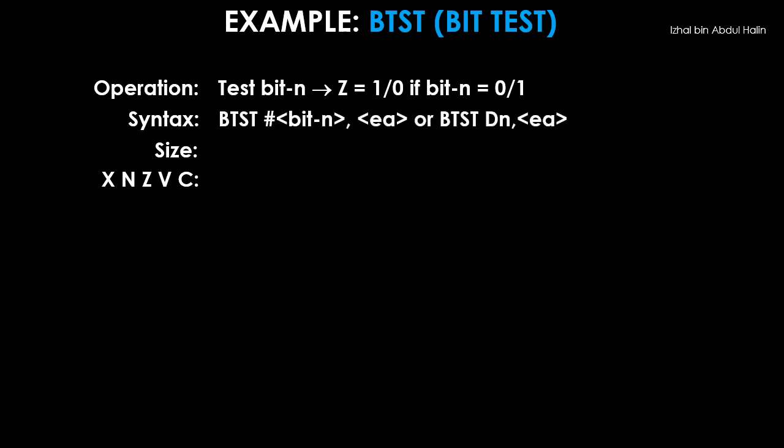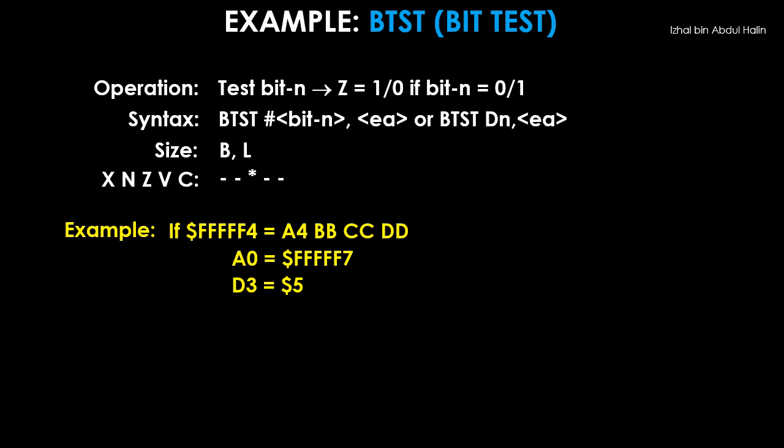The operand size is either byte or long word. The only flag that is affected by this instruction is the Z flag. Now for the example, the long word stored in address FFF4 is shown. Address register A0 initially holds FFF7. D3 holds 5.